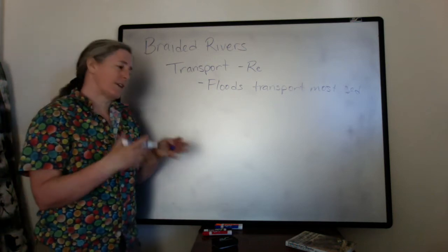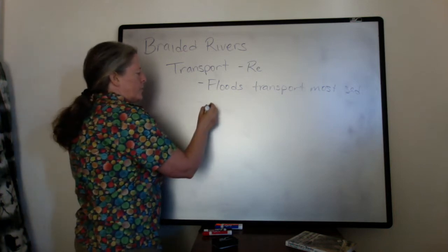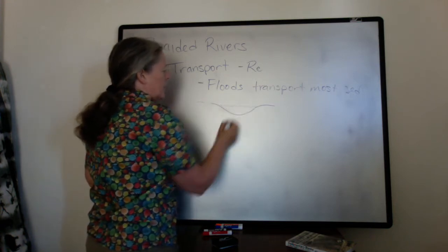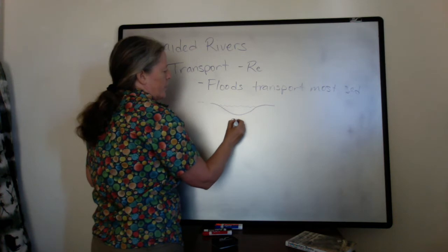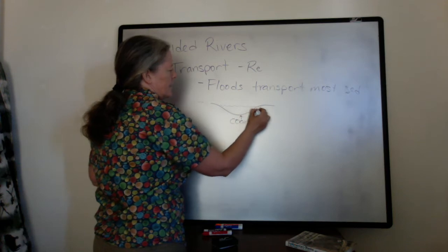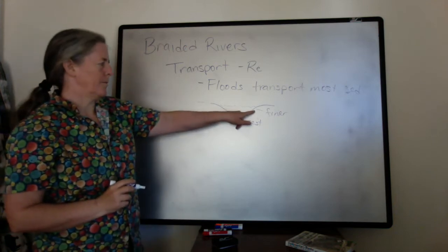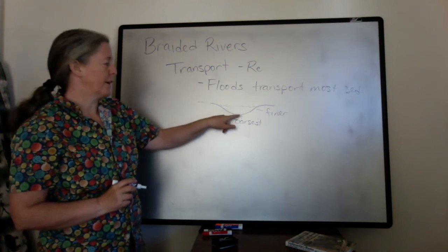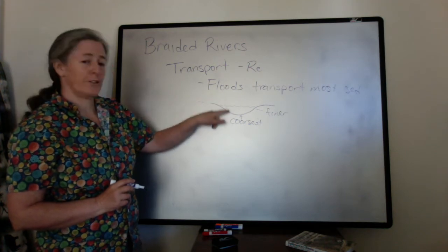The rest of the time, the finer sediment can still be transported. If you look at one of the channels at a lower flow, you end up with the Reynolds number highest in the middle and lowest on the edge, so you end up with the coarsest sediment in the center and finer sediment being deposited on the shallow parts. The fine sediment is being transported everywhere in the whole channel, but the coarsest sediment can only be transported in the deepest parts or during floods.